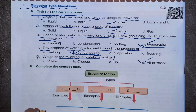B: Complete the concept map. States of matter — types: we have three types of states of matter — solid, liquid and gas. Examples of solids are toothbrush, car, etc. Examples of liquids are rain, milk, paint, etc. Examples of gases are bug spray, perfume, etc.